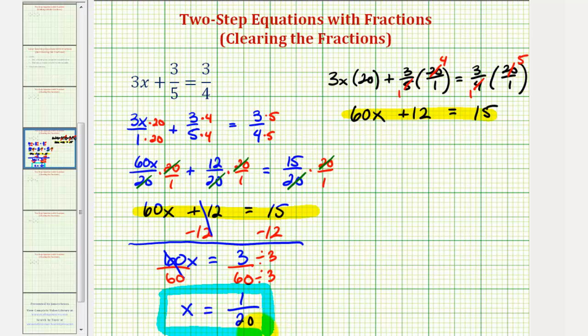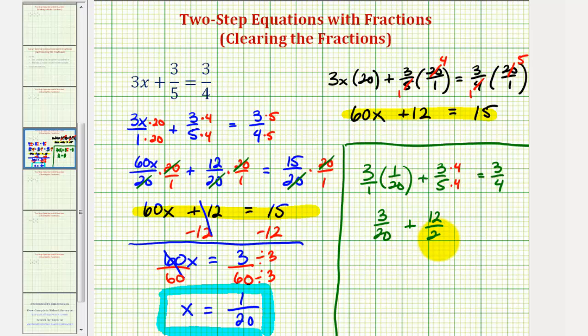Now let's check this, which means if we substitute 1/20 into the original equation, it should satisfy the equation. So we'd have 3 times 1/20. I'll write this as 3/1 times 1/20 plus 3/5 equals 3/4. So here we have 3/20. If the denominator is 20, we'd multiply 3/5 by 4/4. That would be 12/20 equals 3/4 is equivalent to 15/20. We multiply by 5/5. Well, 3/20 plus 12/20 is 15/20. So our solution checks and is correct.